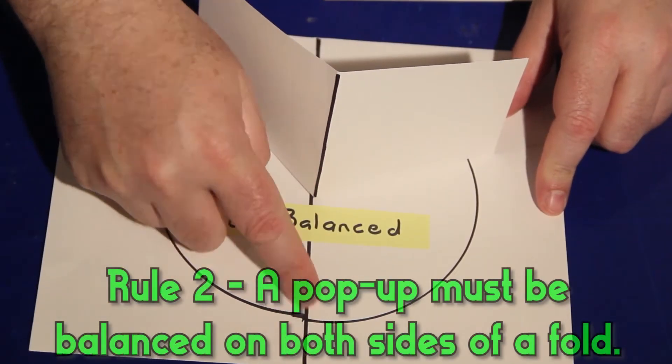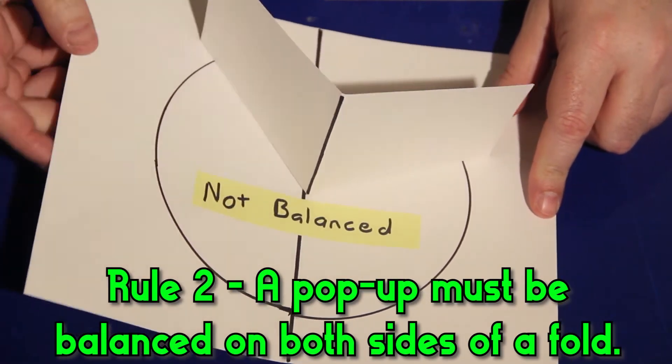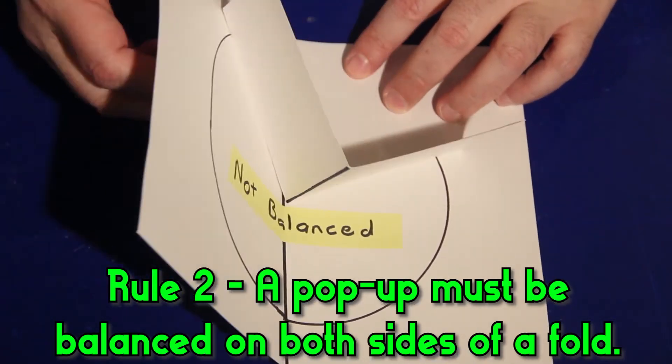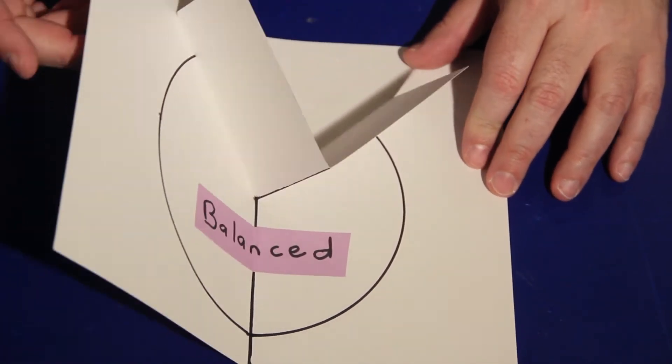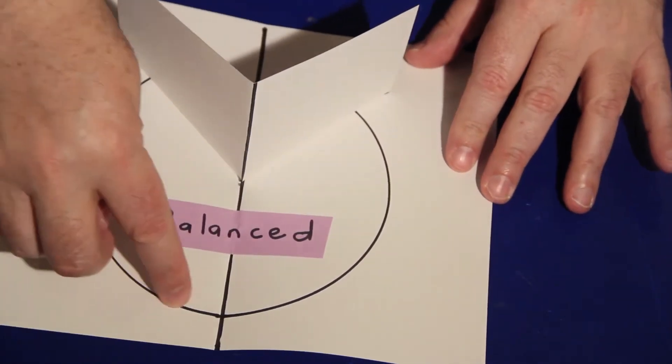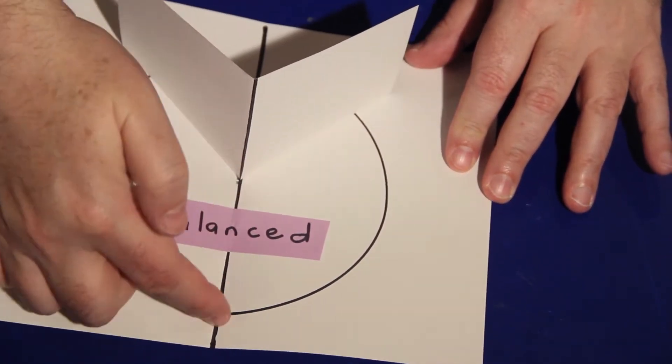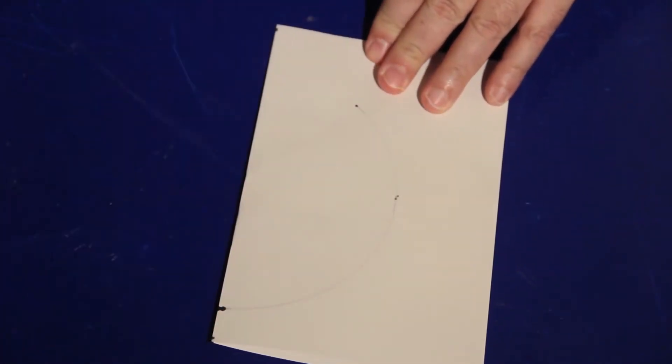Rule 2. Second, a pop-up must be balanced over a fold. Here, even though the V-Fold crosses the centerfold, the angle on the left and right are different. It isn't balanced. So, when I try to close it, it doesn't work properly. But don't worry, I'll show you a trick to help make sure it is balanced without having to measure.